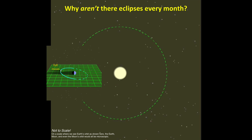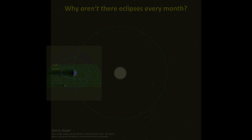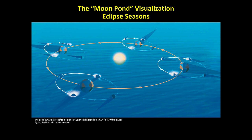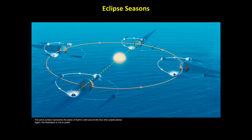A good way to visualize the three-dimensional nature of these orbits is to imagine Earth's orbit on the surface of a pond, so that the Moon's orbit crosses through the surface. The nodes are the points at which the Moon splashes into or out of the water on each orbit, and if you connect them with a line, this line keeps approximately the same orientation throughout the year. There are only two time periods each year during which the nodes line up close enough with Earth and the Sun to make eclipses possible. These periods, called eclipse seasons, each last a little less than five weeks, which is enough time for both a lunar eclipse at full Moon and a solar eclipse at new Moon.